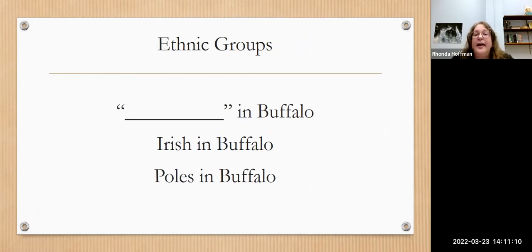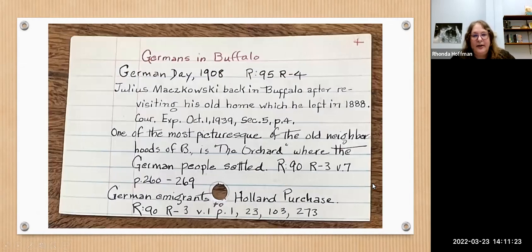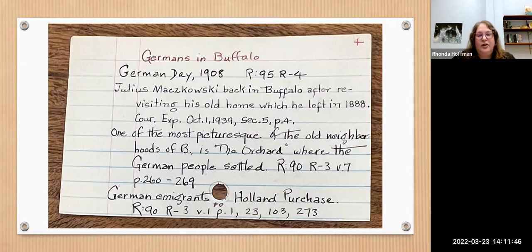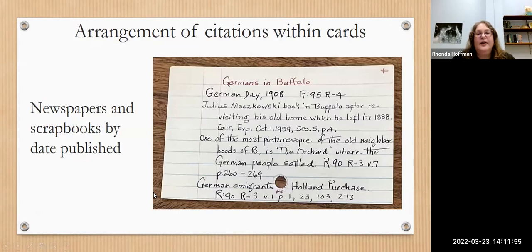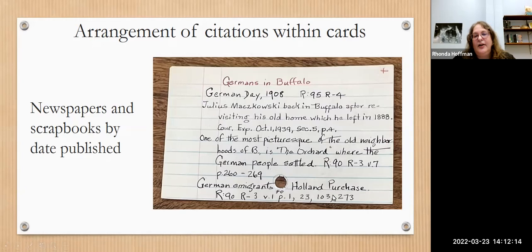A good topic to look under for genealogists is ethnic groups. We often list them by the ethnic group in Buffalo — Irish in Buffalo, Poles in Buffalo, Germans in Buffalo. There are many different citations, including something on a Buffalo neighborhood: 'one of the most picturesque of the old neighborhoods is the Orchard where German people settled,' and an article about German emigrants related to the Holland Land Company purchases. Within the cards, items are usually arranged first in date order.